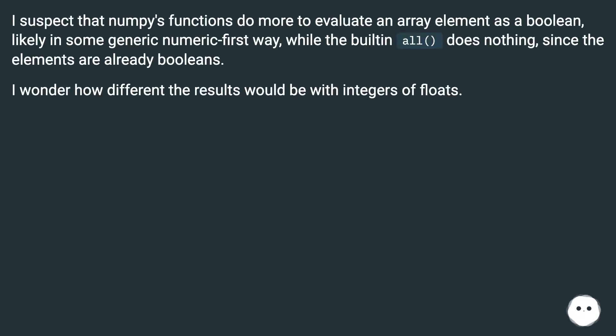I suspect that NumPy's functions do more to evaluate an array element as a boolean, likely in some generic numeric-first way, while the built-in all does nothing, since the elements are already booleans. I wonder how different the results would be with integers or floats.